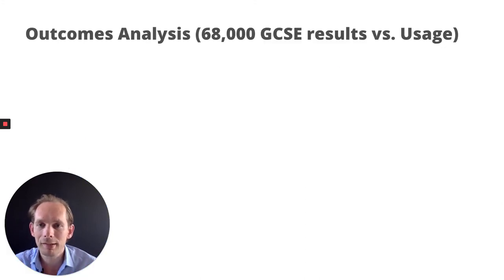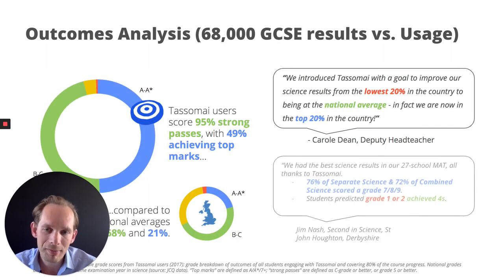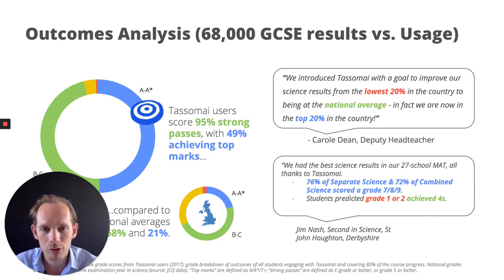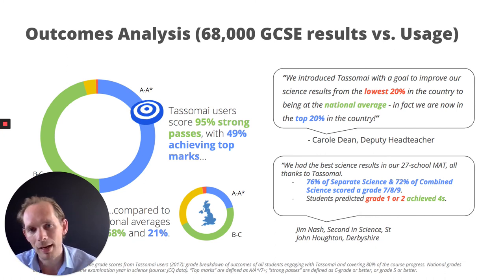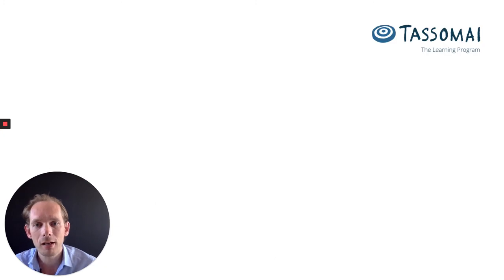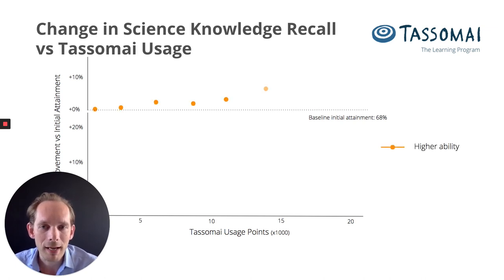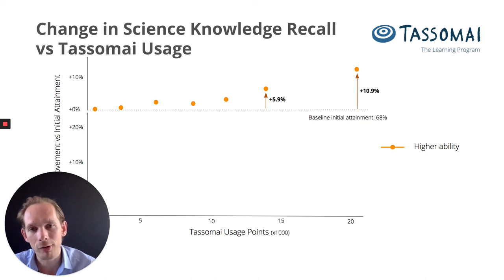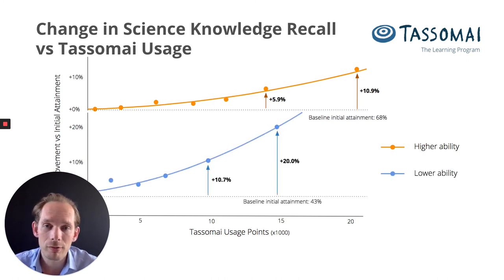Please go to our website and see our downloadable impact report — we're very strong on showing our evidence of impact. One study was about literally using TASMI and getting better grades. Another was about increased use of TASMI affecting a change in attainment — much more what we want to see. Higher attaining students see a progress of on average 10% from higher usage, and lower attaining students even more so, which we were thrilled to see.